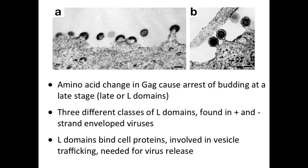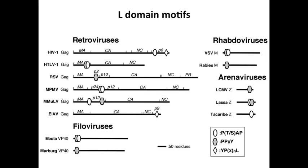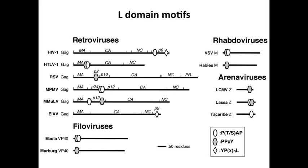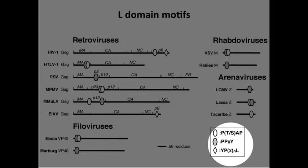These sequences were eventually found in many different enveloped viruses — plus and minus strand RNA viruses. These are sequences that are essential to complete the budding process. It turns out that these L domains — late domains — bind cellular proteins involved in vesicle trafficking. Viruses have usurped this step in the cell, and these L domain motifs are found in retroviral genomes, in Ebola viruses, rhabdoviruses, and arenaviruses. All of these viral glycoproteins have sequences that allow them to interact with the cellular membrane fusion machinery.